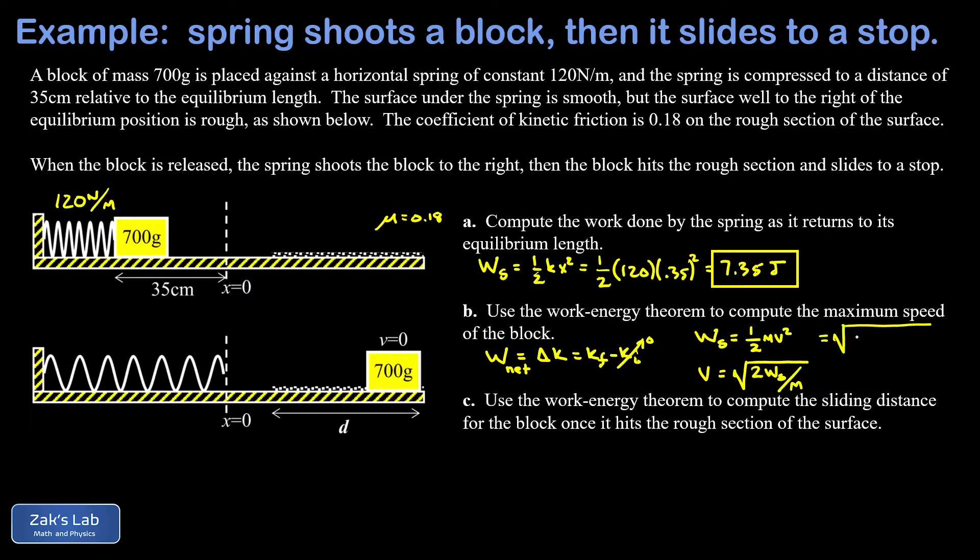Plugging in the numbers, I get 2 times 7.35 divided by 700 grams. Well that needs to be converted to kilograms, that's 0.7 kilograms. And when I run the numbers on this, to three significant digits I get 4.58 meters per second.